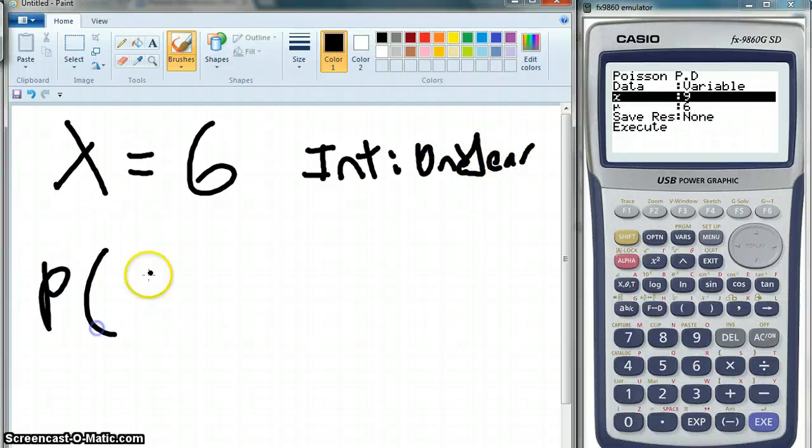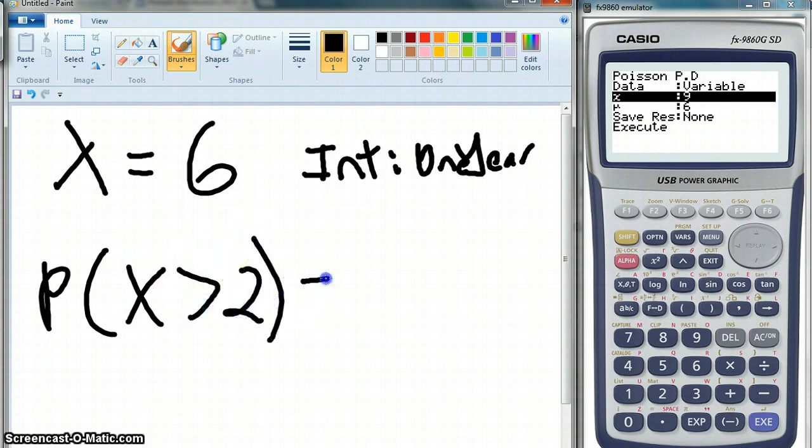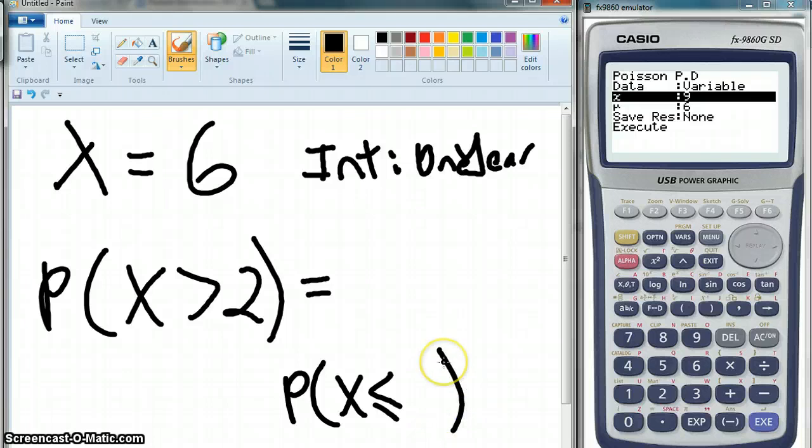We wanted the probability that X was more than two shark attacks in a year. Now, what I've got to do here is my calculator only gives me the probability of X less than or equal to something, so I need to change this expression. It could be zero, it could be one, and it could be two.